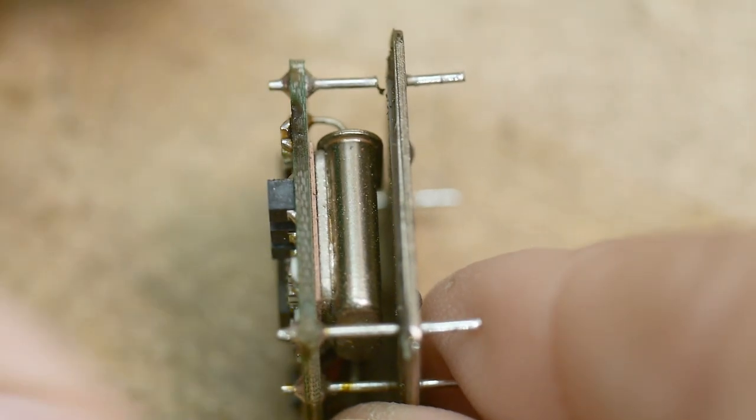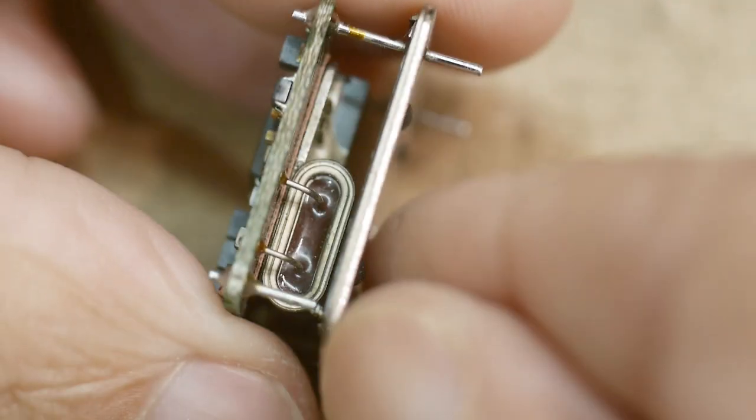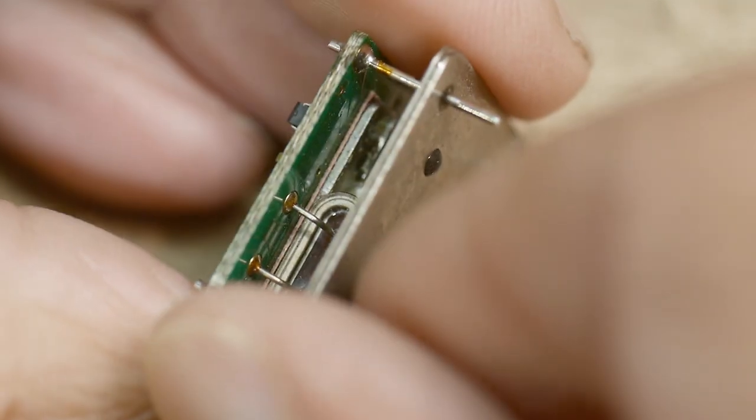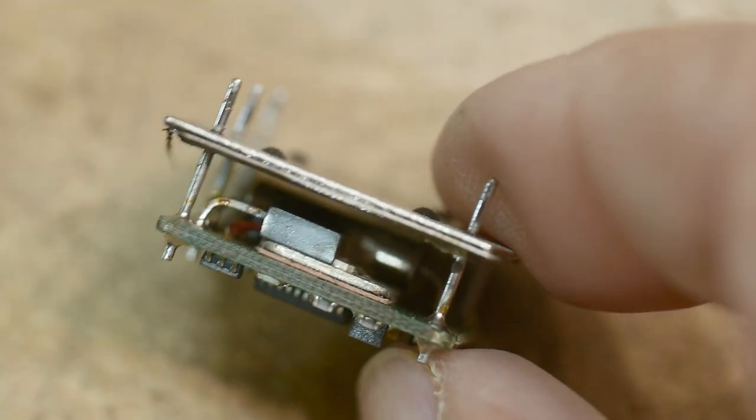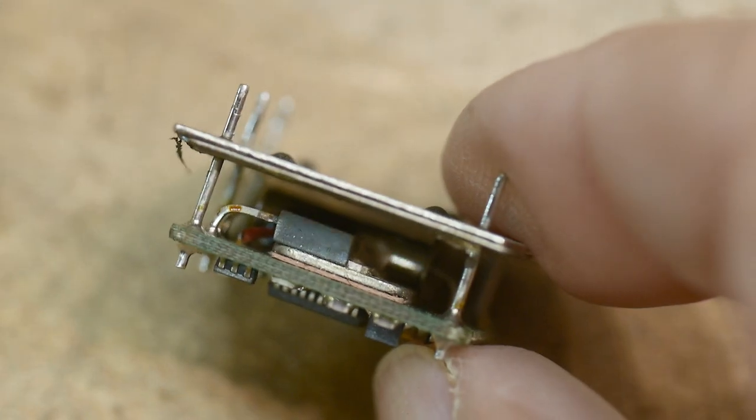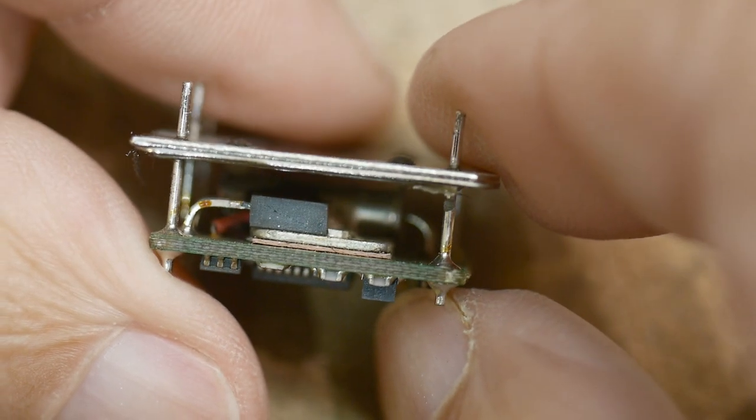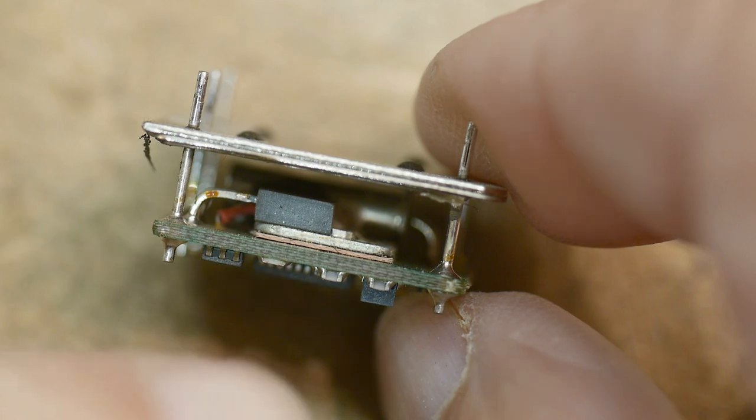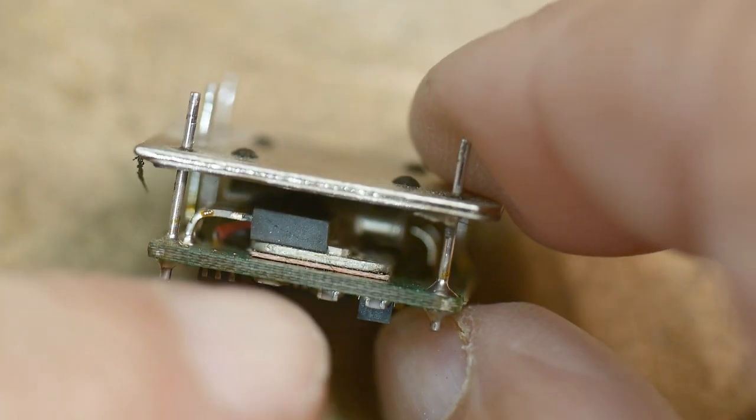Well, the crystal's tucked up underneath there. Let's see here if I can focus a bit on that. So yeah, the crystal is underneath there, and the other thing that's underneath there is a TO-220 transistor, otherwise known as a heating element.